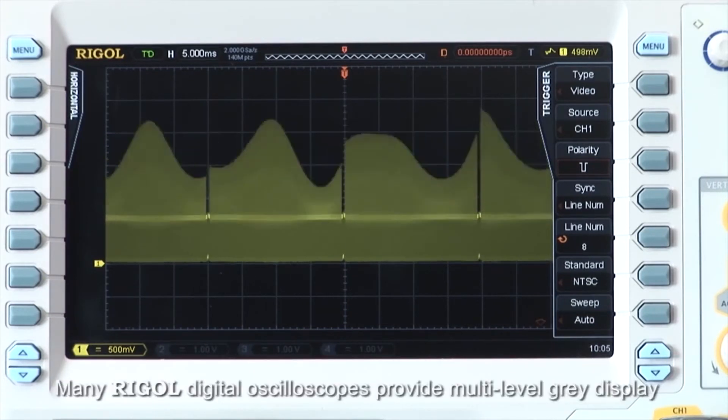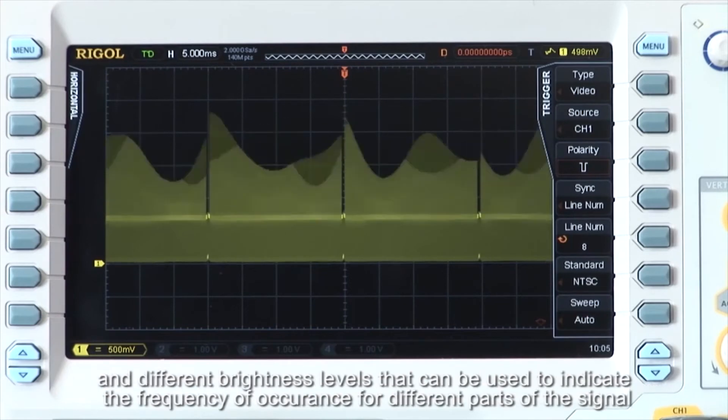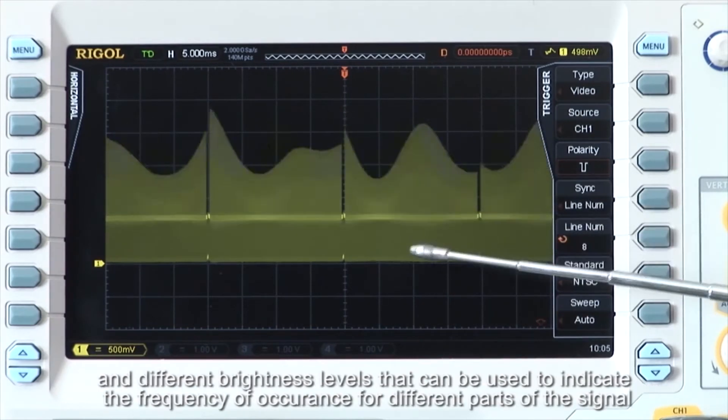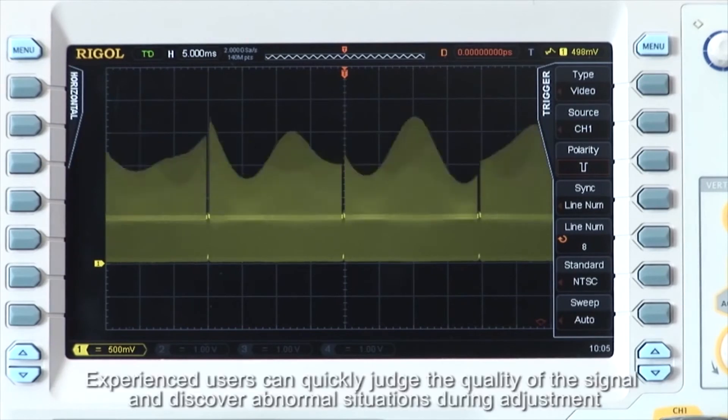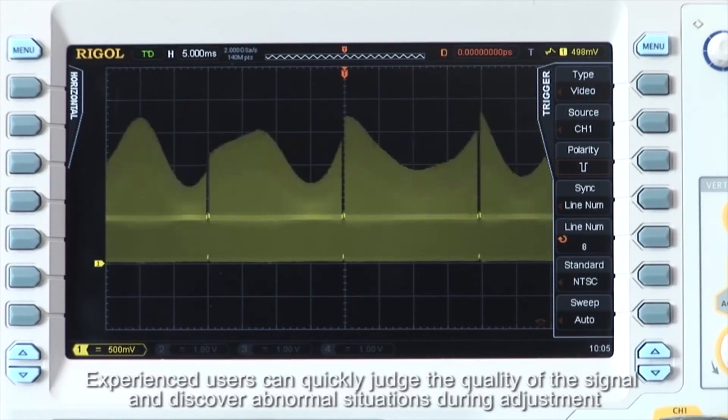Many Regal digital oscilloscopes provide multi-level gray display and different brightness levels that can be used to indicate the frequency of occurrence for different parts of the signal. Experienced users can quickly judge the quality of the signal and discover abnormal situations during measurement.